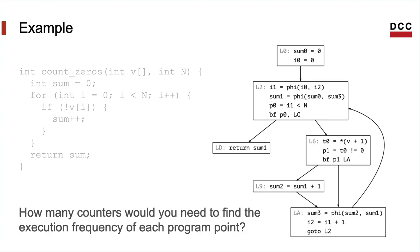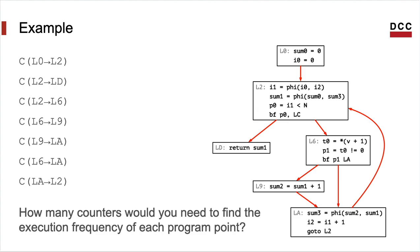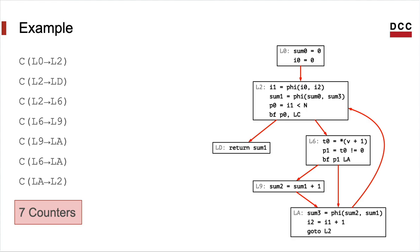How many counters would we need to find the exact number of times that each edge of the program CFG was traversed during execution? A counter is just a variable that we increment whenever an edge is visited by the program flow. In principle, we could add one counter to each edge of the program CFG. That would give us seven counters — one variable tracking the execution frequency of each edge.